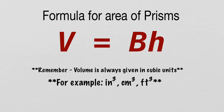We're going to use a formula. I put a reference sheet with all the formulas — there's a link on each of the Google Classroom pages so you can download it. The formula we're going to use for all prisms is volume equals capital B times H. Volume is always given in cubic units — inches cubed, centimeters cubed, feet cubed, etc.